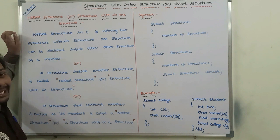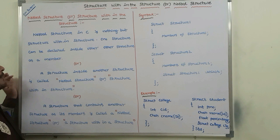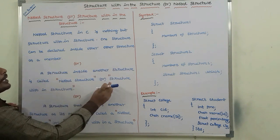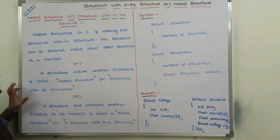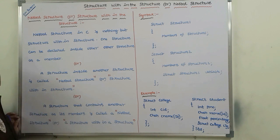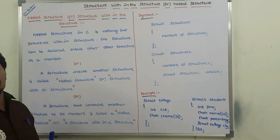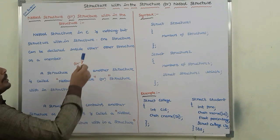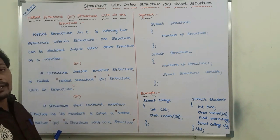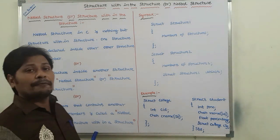One entire structure can be declared as a data member in another structure — this is called a structure within the structure or a nested structure. A structure that contains another structure as its data members is called a nested structure. We can use any one of these definitions.